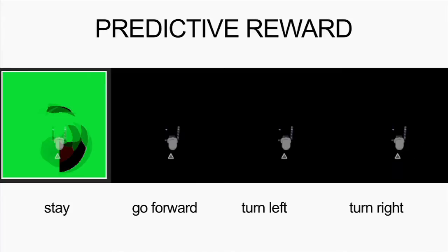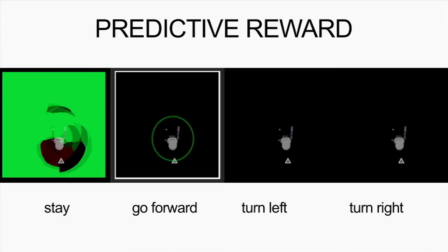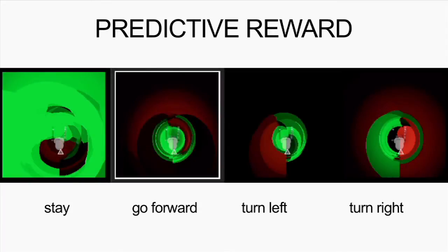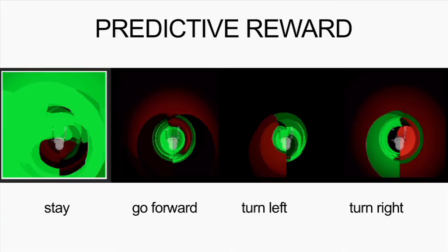After fully painting the state space where the first action is correct, the trainer then changes the state to make the action incorrect and gives a few negative rewards. The agent will then try a new action, and the trainer will again paint the state space where this action is correct, proceeding in this manner until all actions have been painted.